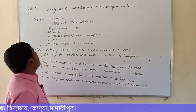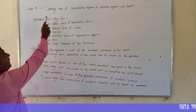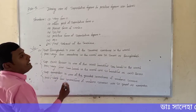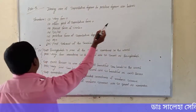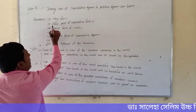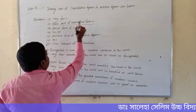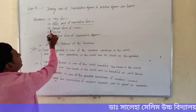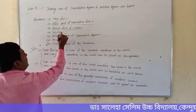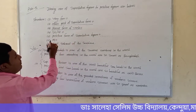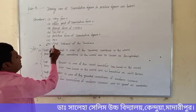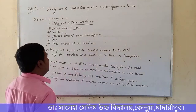Now we will go to the next rule — Rule Two. For sentences joining 'one of the' superlative degree to positive degree, the structure is: Very few + [other part of superlative degree] + plural form of verb + so/as + [positive form of superlative degree] + as + [first subject of the sentence].